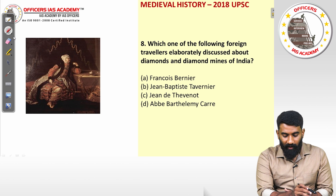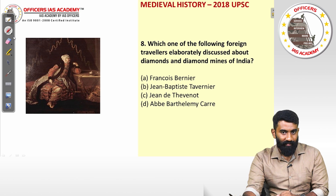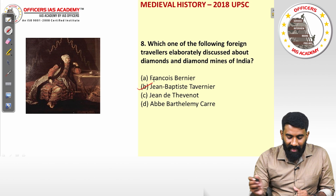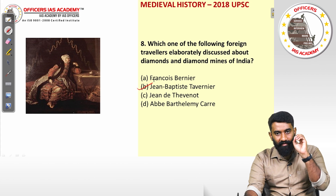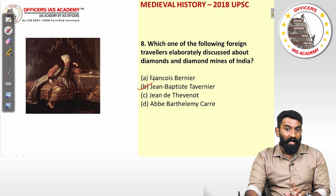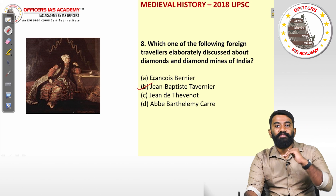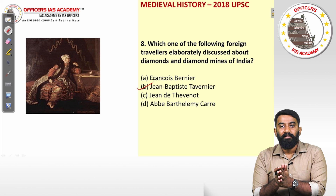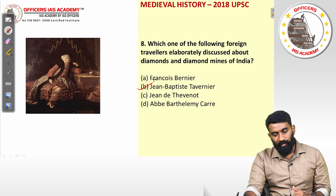Question eight: which foreign traveler elaborately discussed diamonds and diamond mines in India? The answer is Jean-Baptiste Tavernier. He travelled to different parts of India and documented where diamond mines were located. He also studied the Peacock Throne of Shah Jahan and gave an estimate of its cost, studded as it was with gold, silver, platinum, sapphires, and emeralds. The answer is option B, Jean-Baptiste Tavernier.